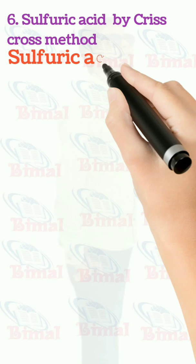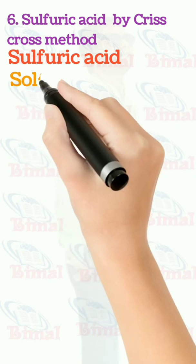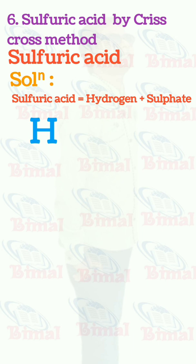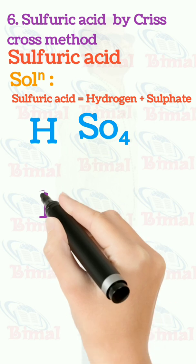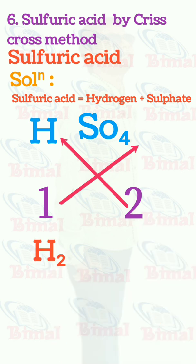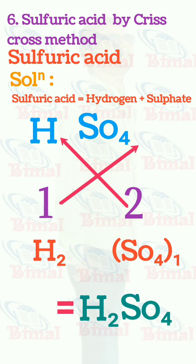Molecular formula of sulfuric acid by criss-cross method. Sulfuric acid is equal to hydrogen plus sulfate. Symbol for hydrogen is H, symbol for sulfate is SO4. Valency of hydrogen is 1, valency of sulfate is 2. When we do criss-cross, the valency is exchanged and we get H2 and SO4(1), which is equal to H2SO4. SO4(1) is just written as SO4 because 1 is not written, so H2SO4 is the molecular formula for sulfuric acid.